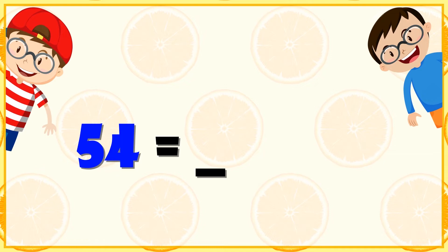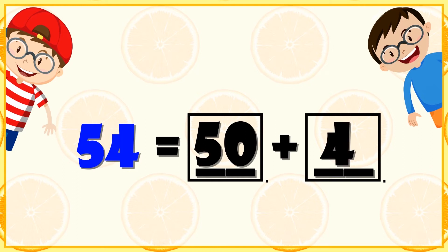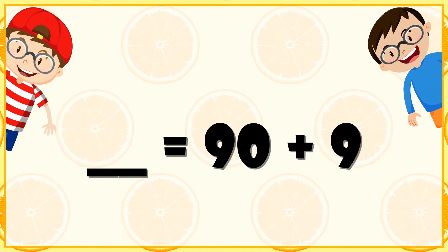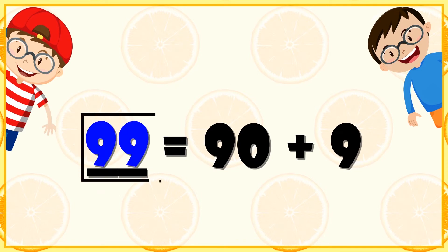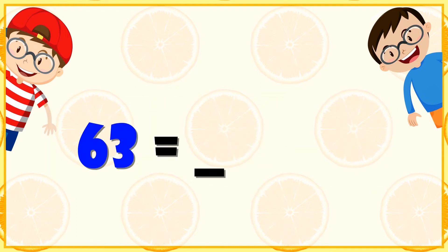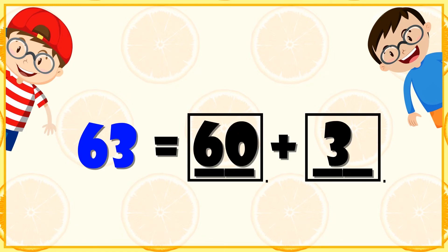54 is equal to dash plus dash — what will come? 50 plus 4 will make 54. Dash is equal to 90 plus 9 — 90 plus 9 will make 99. 63 is equal to dash plus dash — what will come to make 63? 60 plus 3 will make 63.